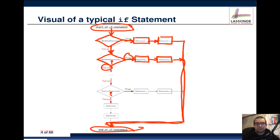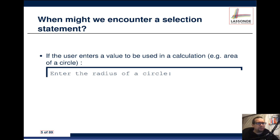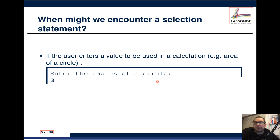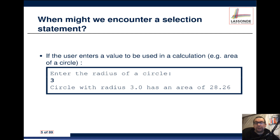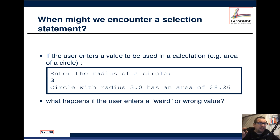When might we encounter a scenario where this is useful? Here's an example: we ask the user to enter a value for a calculation — say, the radius of a circle. The user enters 3, and the program responds that the circle with radius 3.0 has an area of 28.26. But what happens if the user enters a weird or wrong value, like the letter 'a' or negative 3? We'd have to account for that before the calculation to avoid an incorrect or invalid result.